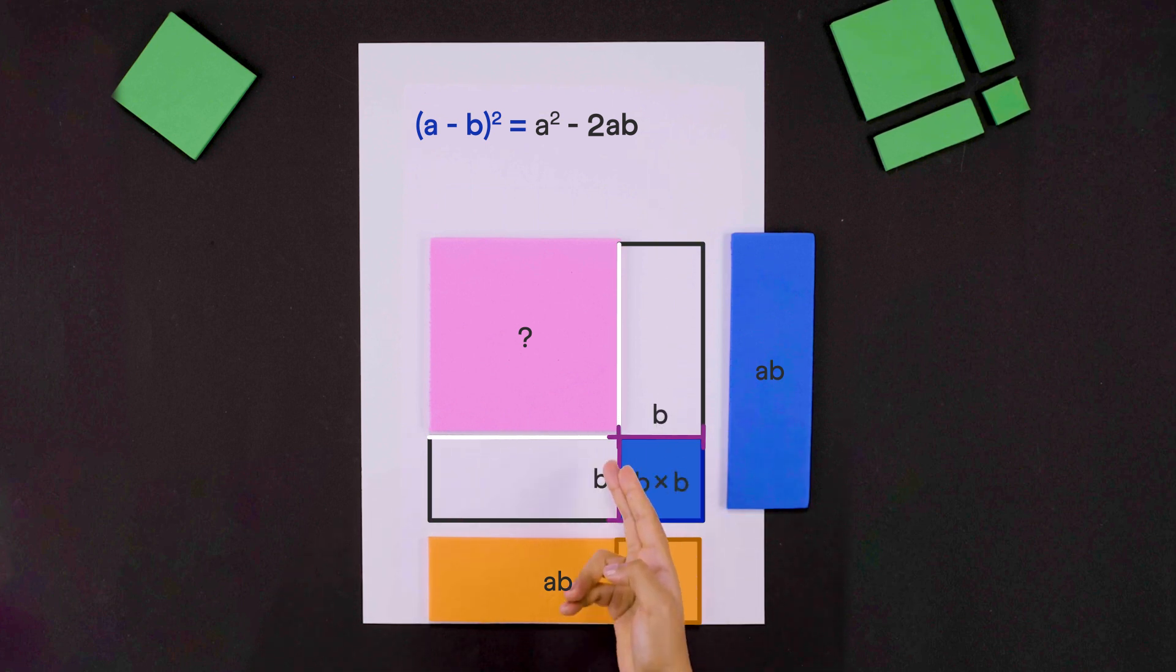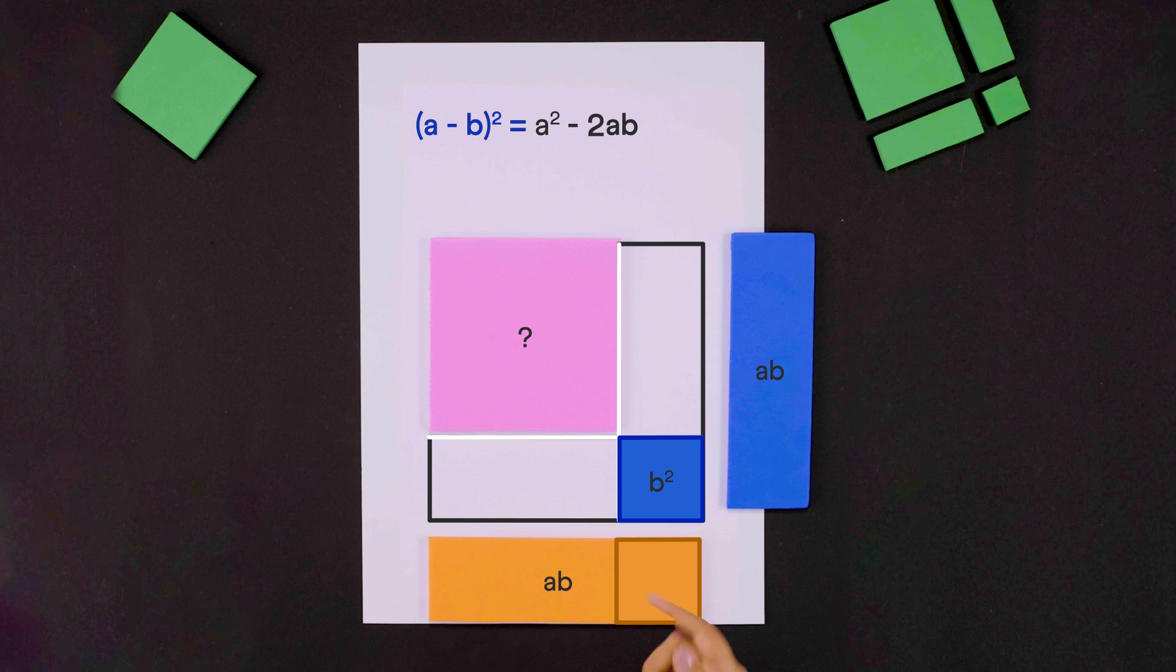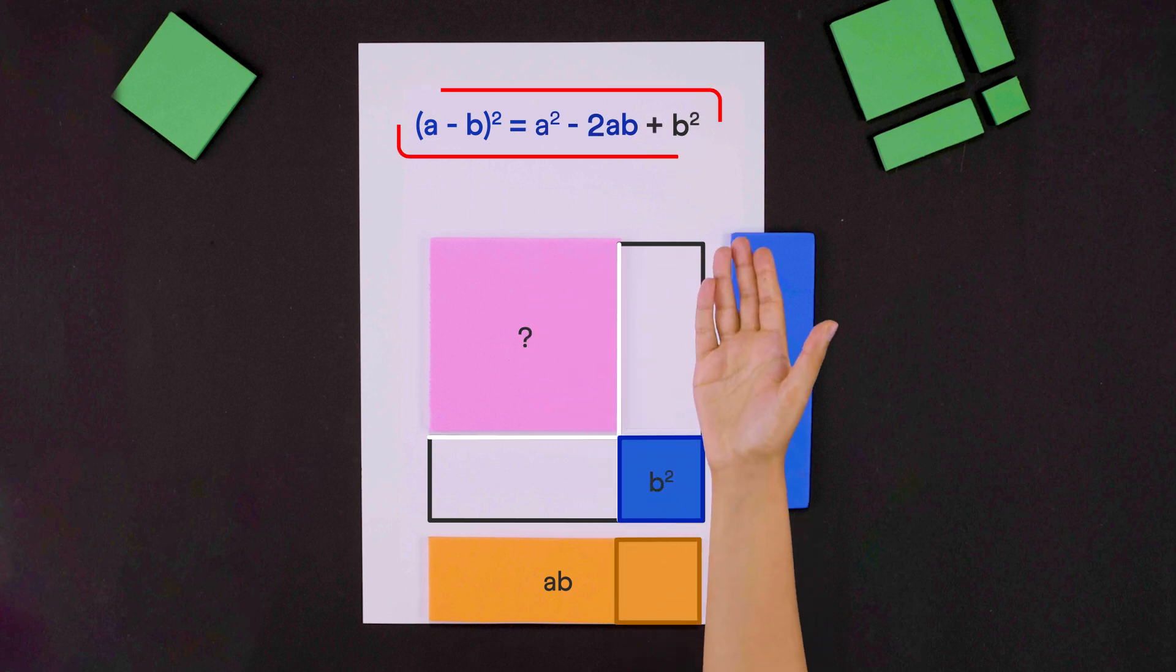Its area is b times b, that's b squared. So we can add it to get a squared minus 2ab plus b squared. And that's our formula.